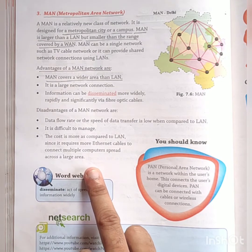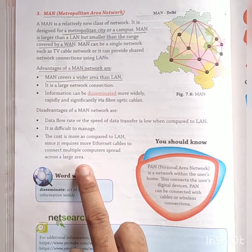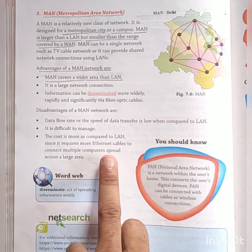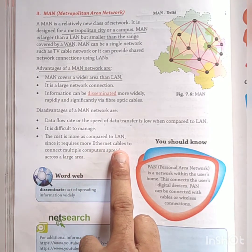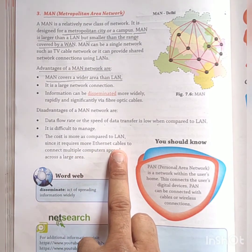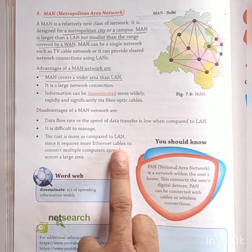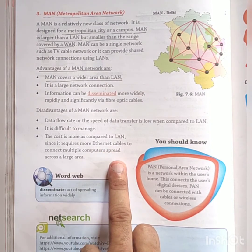Disadvantages of MAN: data flow rate or speed of data transfer is low when compared to LAN. It is difficult to manage, and the cost is more compared to LAN since it requires more Ethernet cables to connect multiple computers spread across a large area — as area increases, cost also increases.